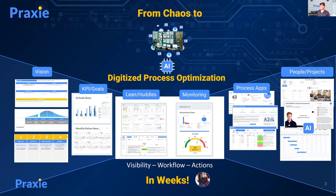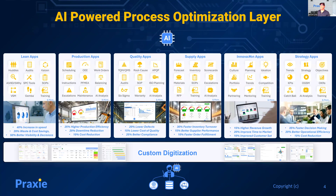And once it's digital, you can use AI on it. We have AI-powered processes in our optimization layer from lean apps, production apps, quality, supply, innovation, and strategy. We do custom applications as well, and everything can sit on top of those ERP or data layers or execution layers that come below.